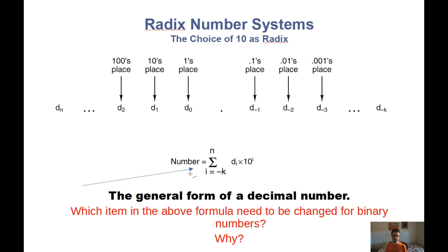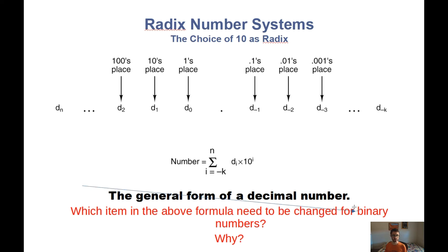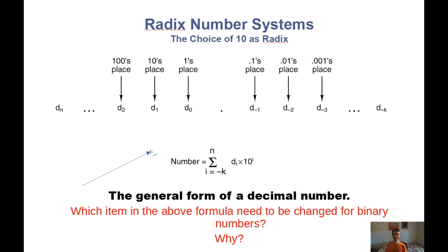That's what this notation in the middle is representing. Some questions to think about: what would you change about this formulation to do it in binary, and why? Our number system — the one you're familiar with — is base 10, because it's easy; we have those 10 fingers and toes. In binary, what would we need to change? We'll get to that shortly.